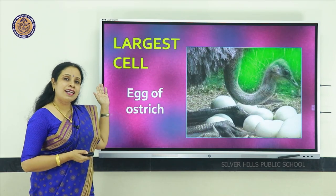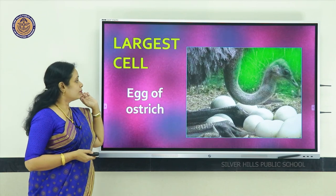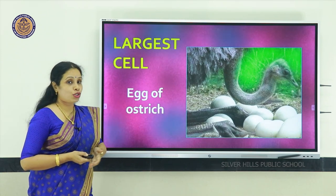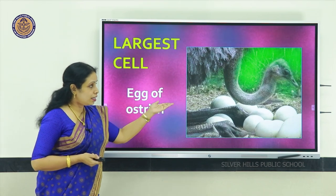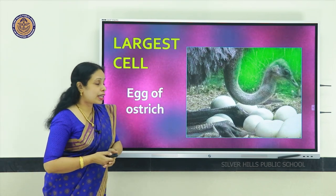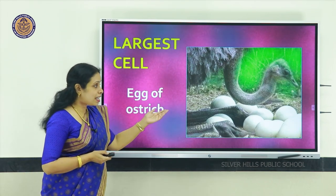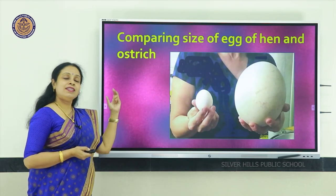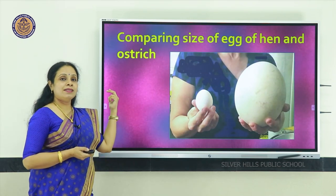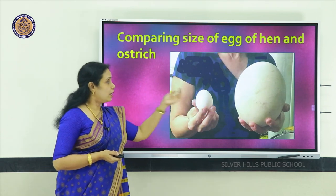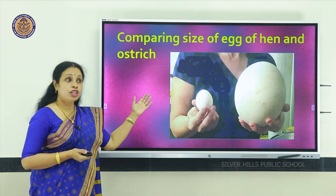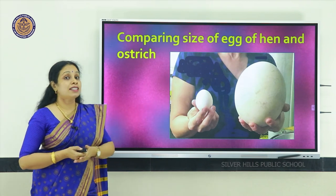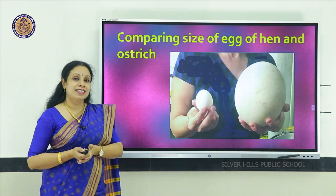Which is the largest cell? It is the unfertilized egg of an ostrich. You can see the mother bird is incubating its eggs, and if you compare the size of an ostrich egg to a hen's egg, you can see how much bigger it is. So that is the single largest cell.